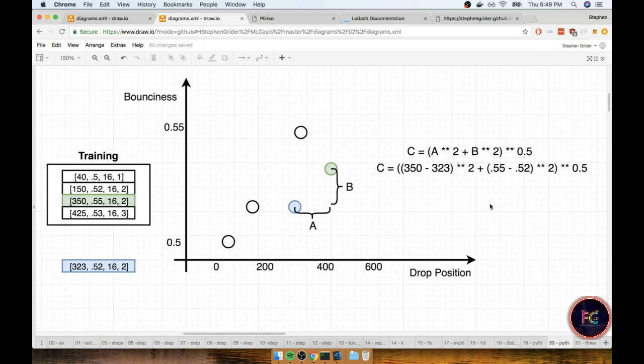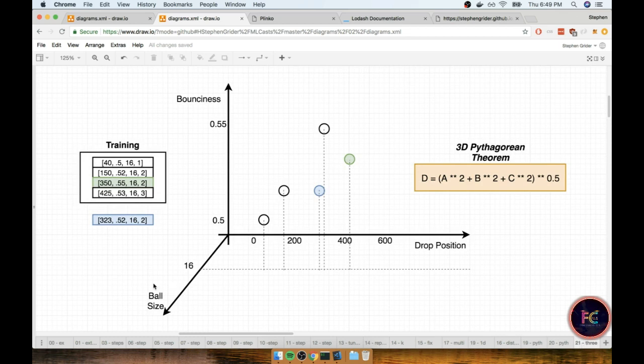Well, once you get into this Pythagorean theorem, adding on additional features is incredibly easy and straightforward. So if we want to add on a ball size metric as well, then we could imagine plotting all of our data points on a three-dimensional space like so,